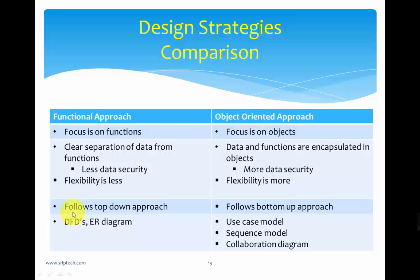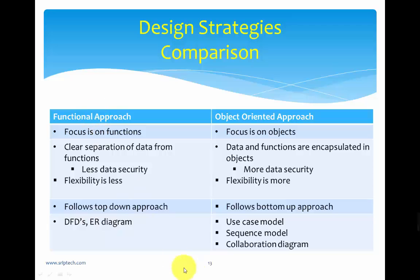Functional design follows a top-down approach: take the problem, break it into sub-problems, and arrive at solutions to each — that is top-down. Object-oriented design follows a bottom-up approach: the smallest unit is an object; we collect similar objects to build a class, then combine classes into a package or project. Data flow diagrams and ER diagrams are the notations used in functional approach, whereas use case models, sequence models, and collaboration models are used in the object-oriented approach.